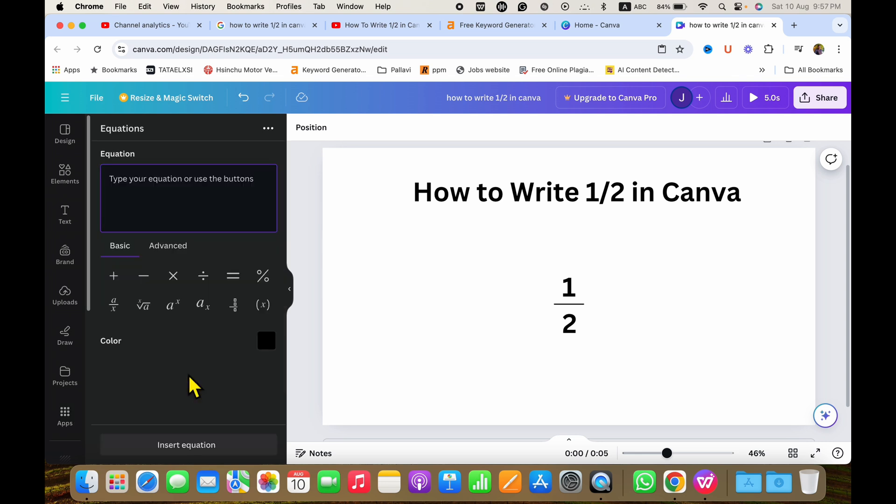Now here to type the fraction you need to select this option a over x. After clicking on this option you will see these two boxes. Just click on the box and type what you want inside the boxes.